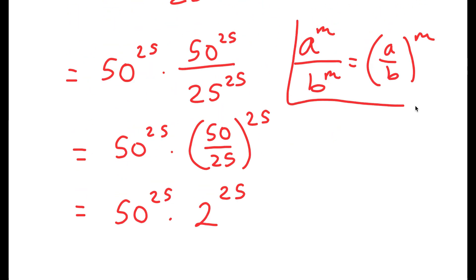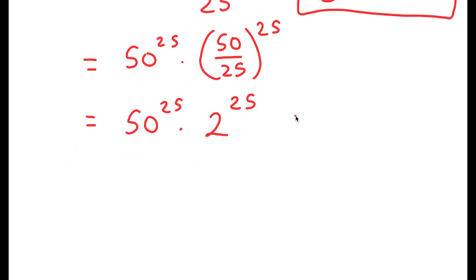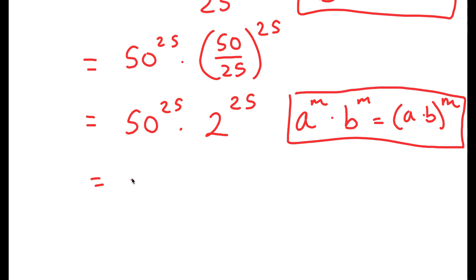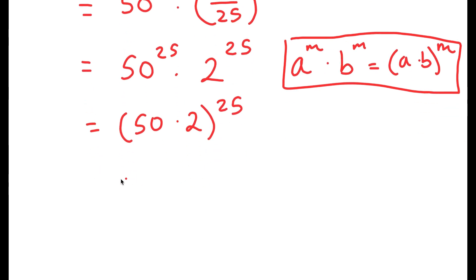Another property I can use, which will be the final property of this video, is that a to the power of m times b to the power of m equals a times b to the power of m — you're basically just factoring out the exponent. So I have 50 to the power of 25 times 2 to the power of 25, which can be written as 50 times 2 to the power of 25. Now, 50 times 2 is 100, so I get 100 to the power of 25.